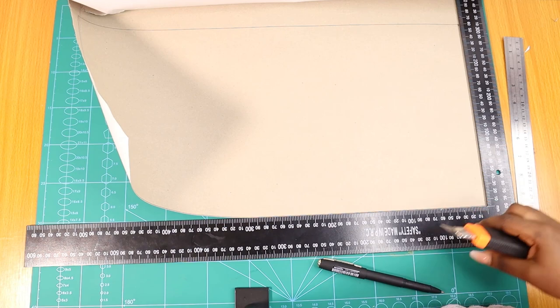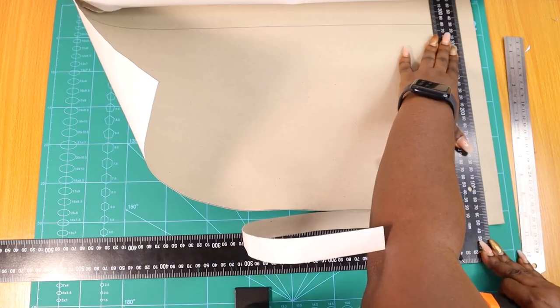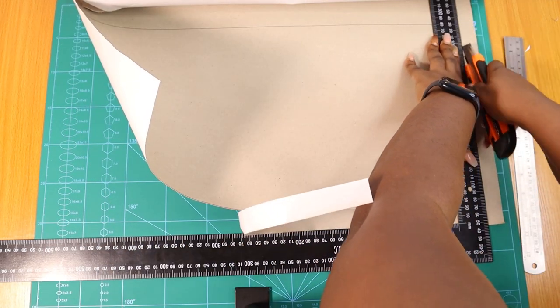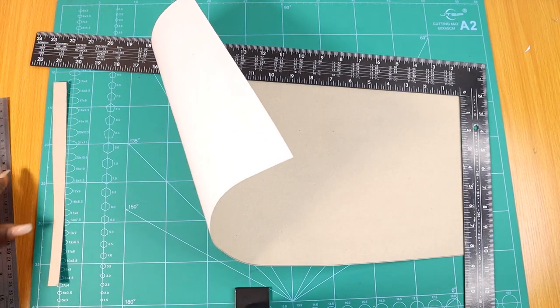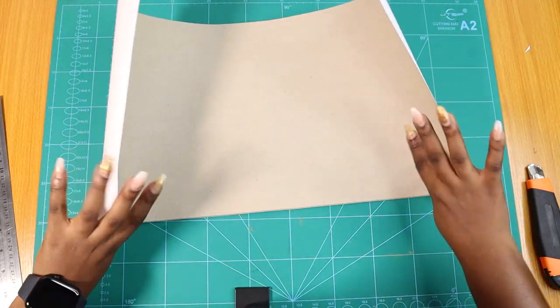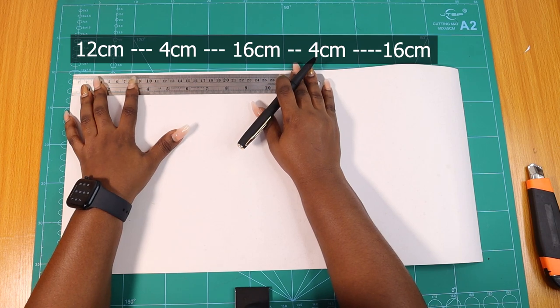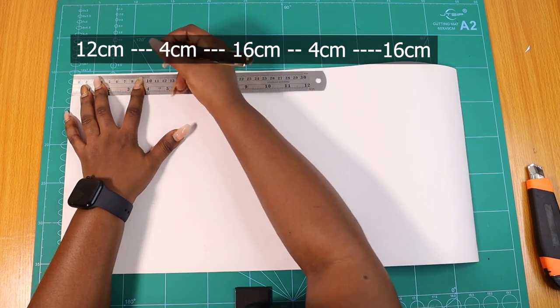So I'm just going to cut the piece out. Here I am using my L ruler and my breakaway blade.